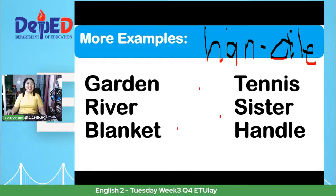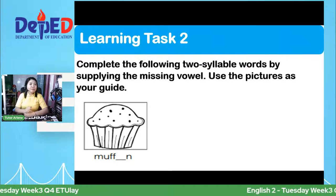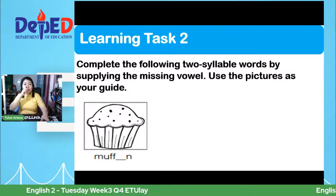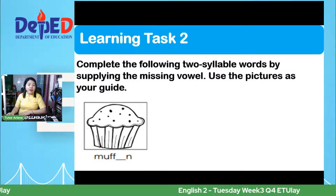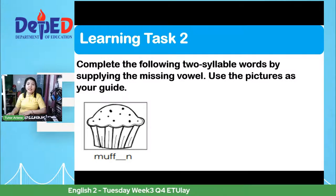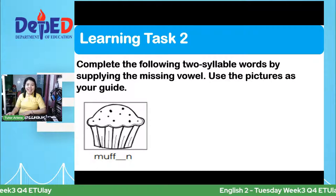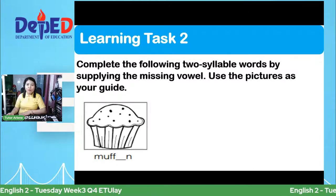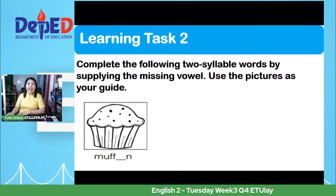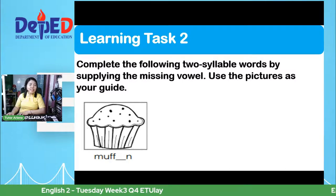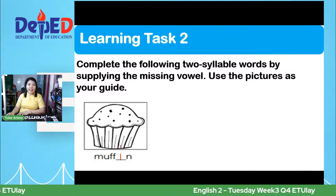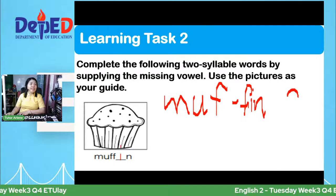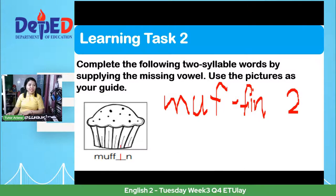For Learning Task 2, complete the following two-syllable words by supplying the missing vowel. Use the picture as your guide. The first picture is a muffin. What is the missing letter? Tama si Janice, Nathan Katibog — the missing letter is I. Muffin: muff-fin. We have two syllables.